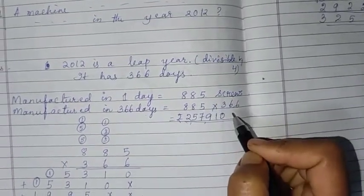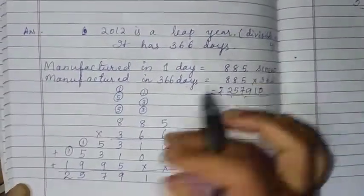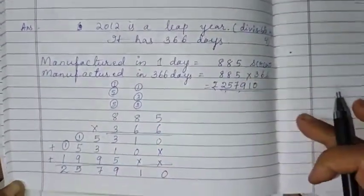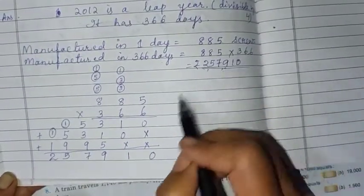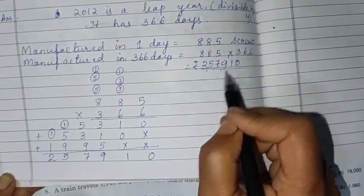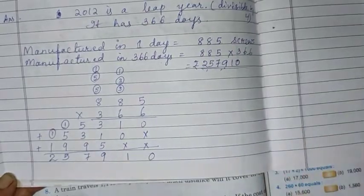So we will multiply by 366. As it is a long multiplication, so we have to do very neatly down. And take enough space and do neatly. Then find the answer and write here. It is 3,23,910.